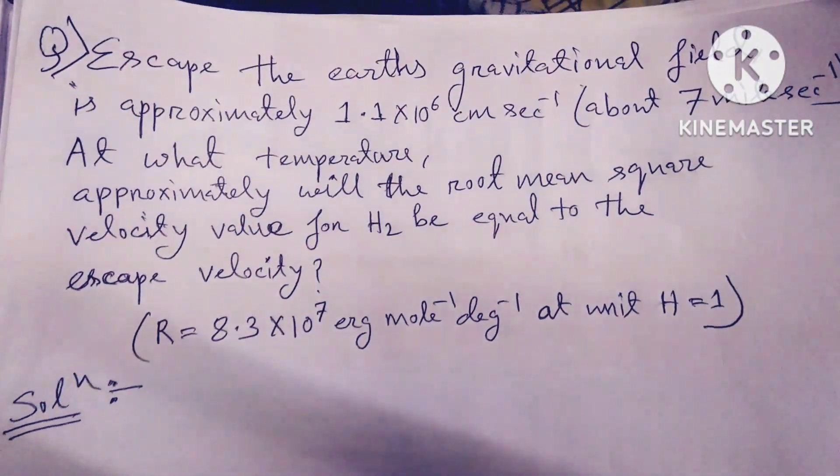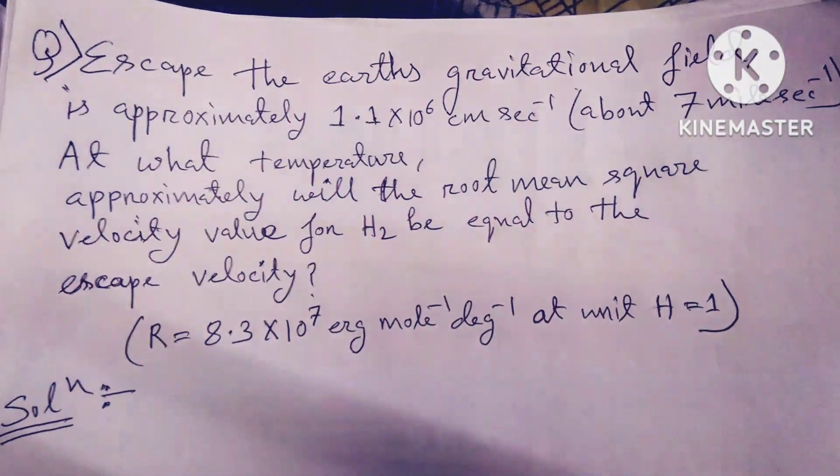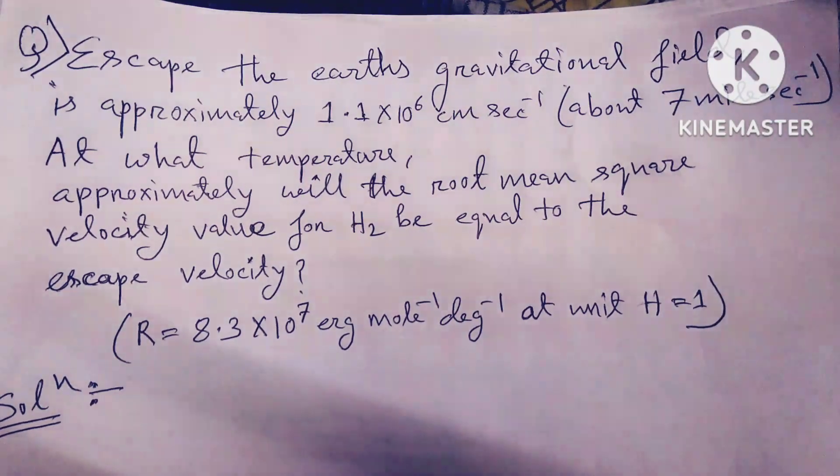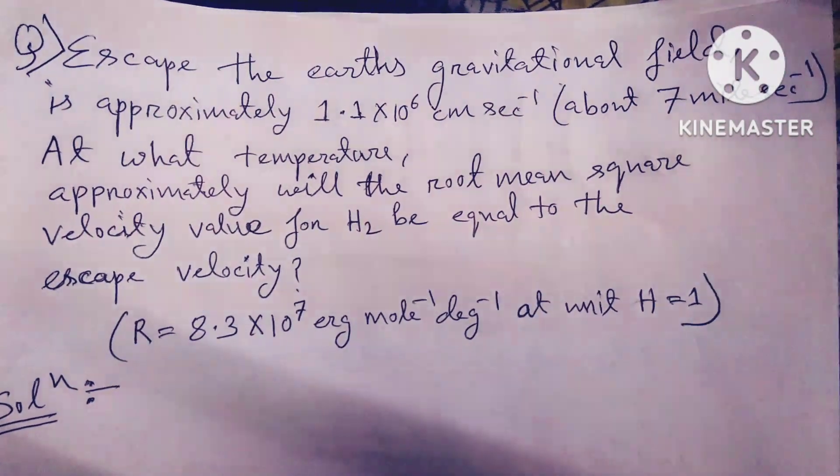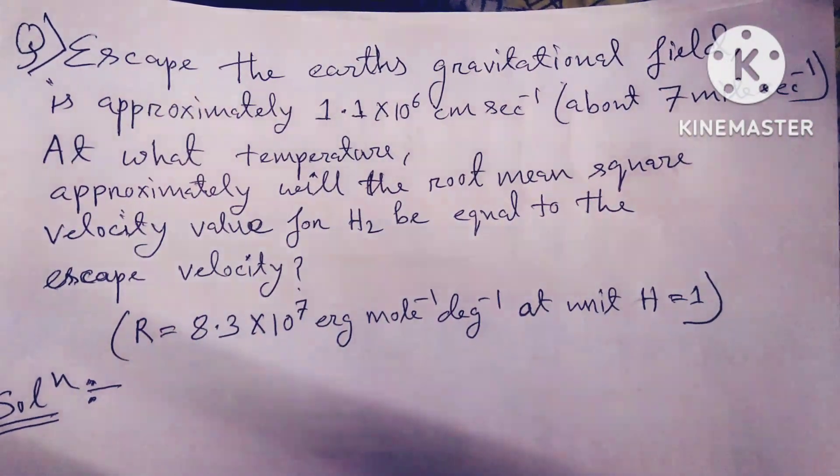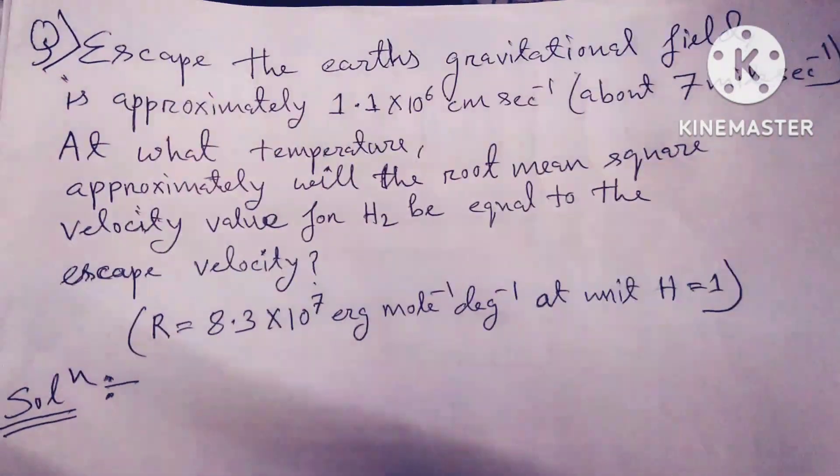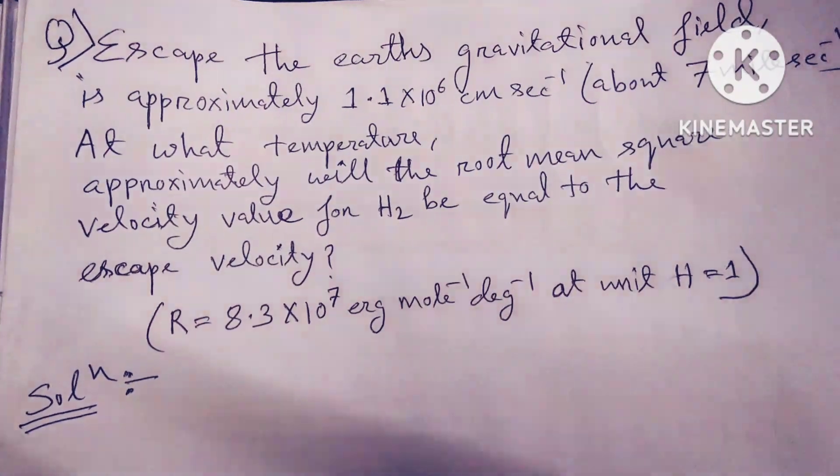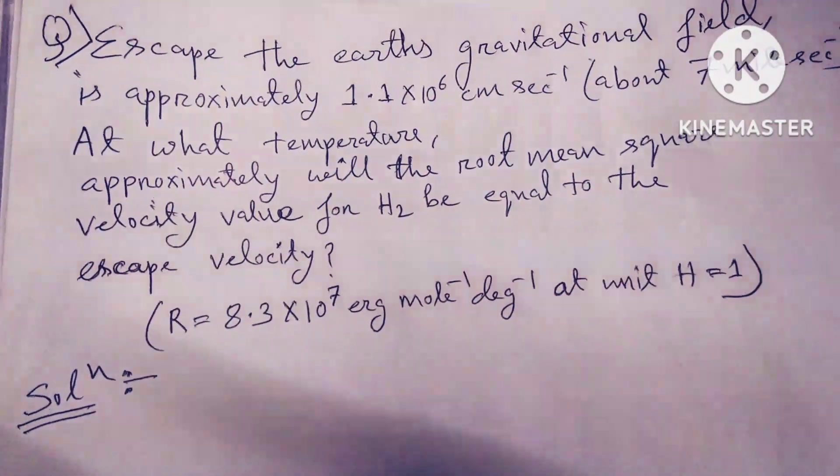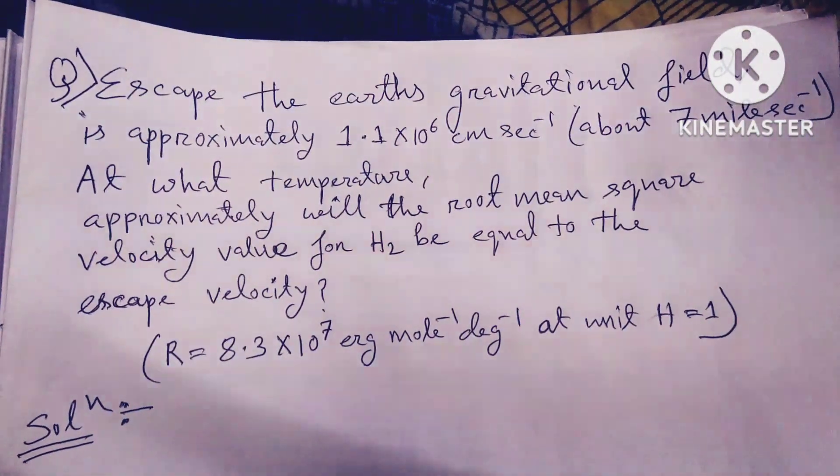To escape the Earth's gravitational field requires approximately 1.1×10⁶ centimeters per second, about 7 miles per second. At what temperature approximately will the root mean square velocity value of H₂ be equal to the escape velocity?